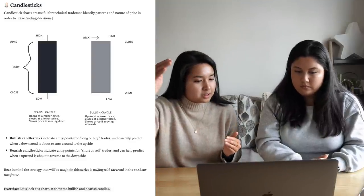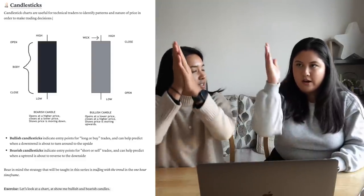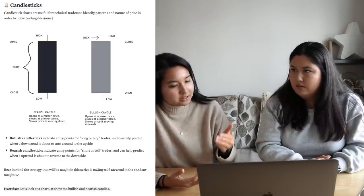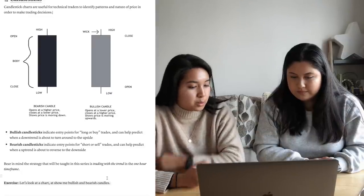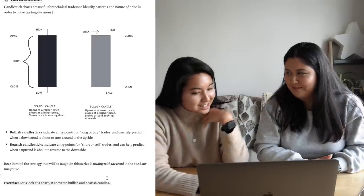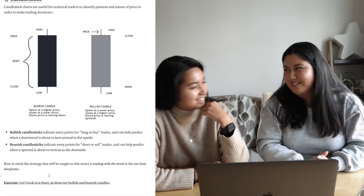When you have loads of bullish candles, it means it's moving to the upside, which is going higher, and vice versa with bearish candles — it's moving to the downside. The strategy I'll be teaching is trading with the trend on the one hour time frame — identifying uptrends and downtrends on the hourly chart. Let's look at a chart now and you've got to show me the bullish and bearish candles.